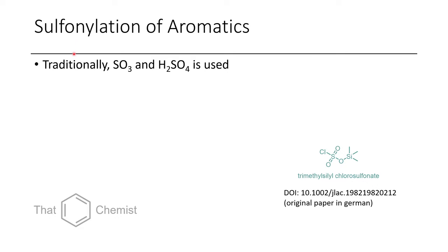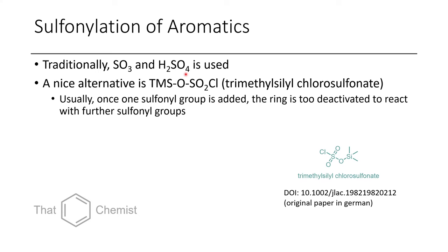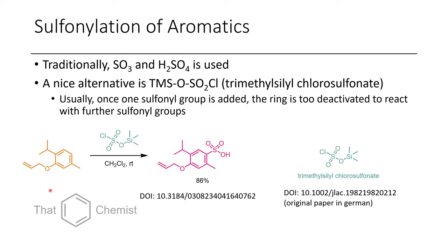To sulfonylate an aromatic, the traditional conditions are oleum — a mixture of sulfuric acid and sulfur trioxide. Sulfur trioxide is very reactive, and when mixed, it forms pyrosulfuric acid, a dimer so acidic it can actually protonate normal concentrated sulfuric acid. An alternative with some modern use is TMSOSO2Cl, trimethylsilylchlorosulfonate. The chloride acts as a leaving group to react with the ring, and in workup you cleave the OTMS group. In one example, this gave really selective, clean, high-yield conversion of a starting material to a sulfonic acid.